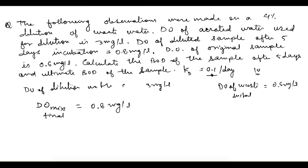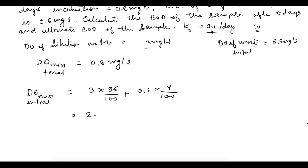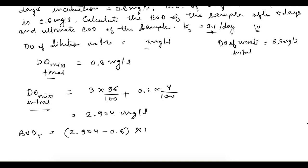We first find the initial DO of the mix: DO of dilution water is 3 mg/L with 96% volume, plus DO of waste is 0.6 mg/L with 4% volume — so 3 × (96/100) + 0.6 × (4/100) — which equals 2.904 mg per liter. Then BOD5 = (2.904 − 0.8) × dilution factor. The dilution factor for 4% dilution is 100/4, which is 25.